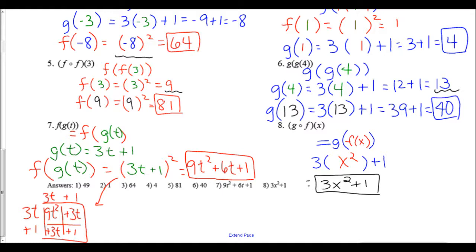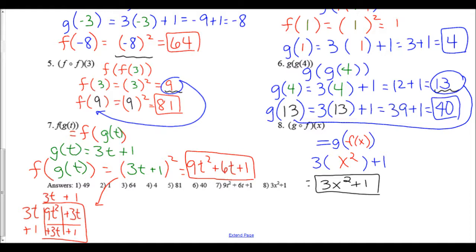For number five, f(f(3)): plug 3 into f to get 9, then plug 9 back into f again to get 81. Number six is g(g(4)): first find g(4) = 3(4) + 1 = 13, then plug 13 back into g: 3(13) + 1 = 40.